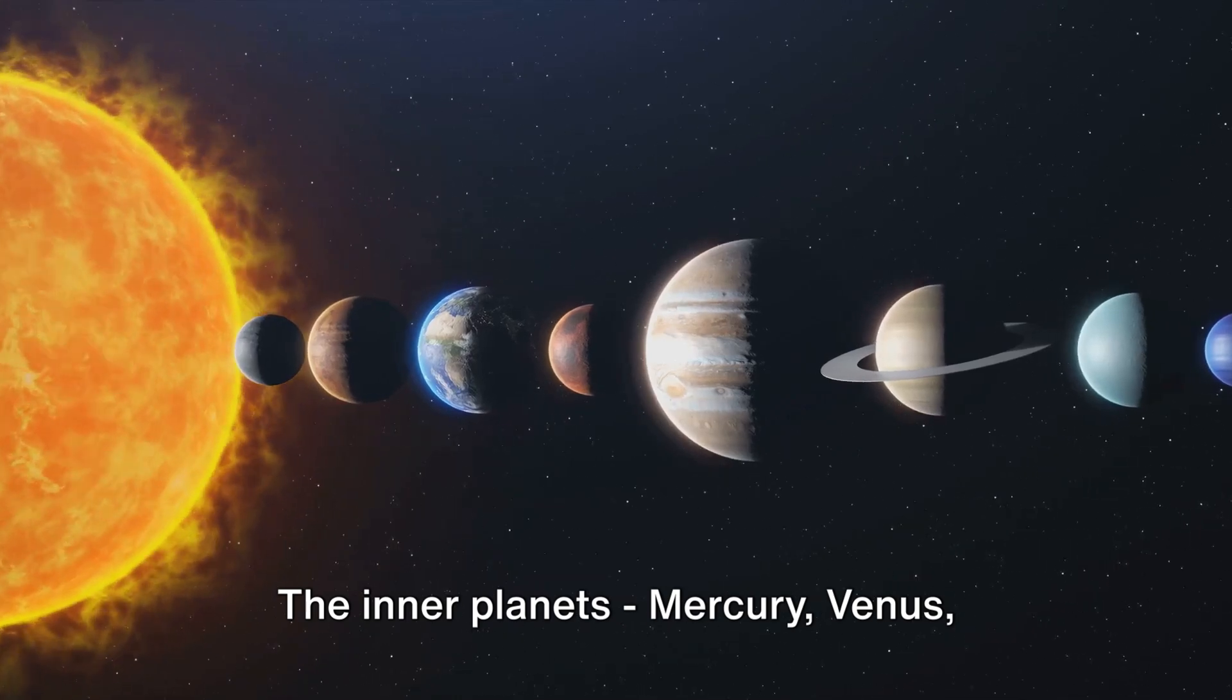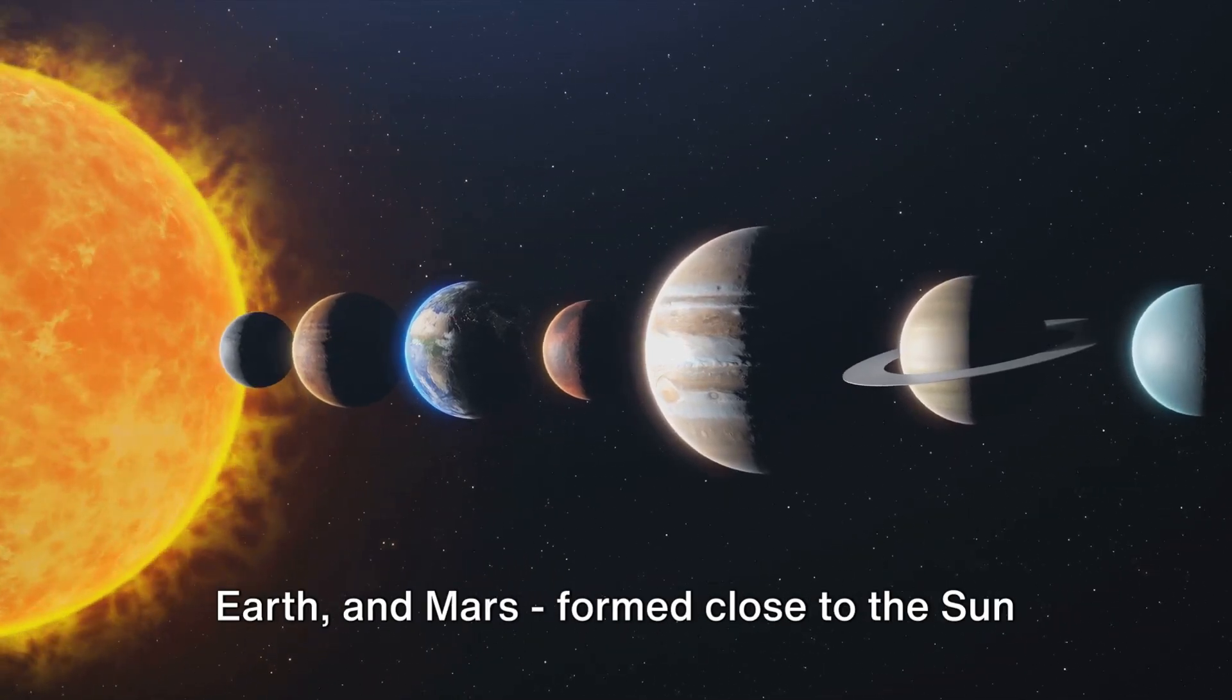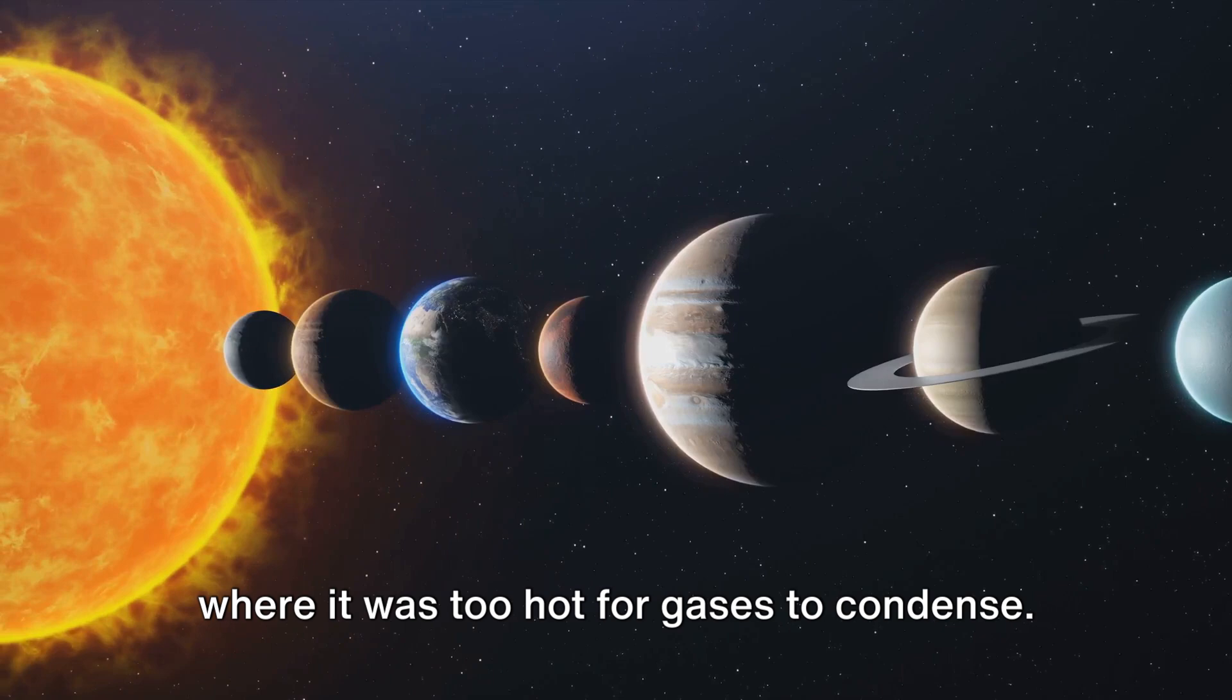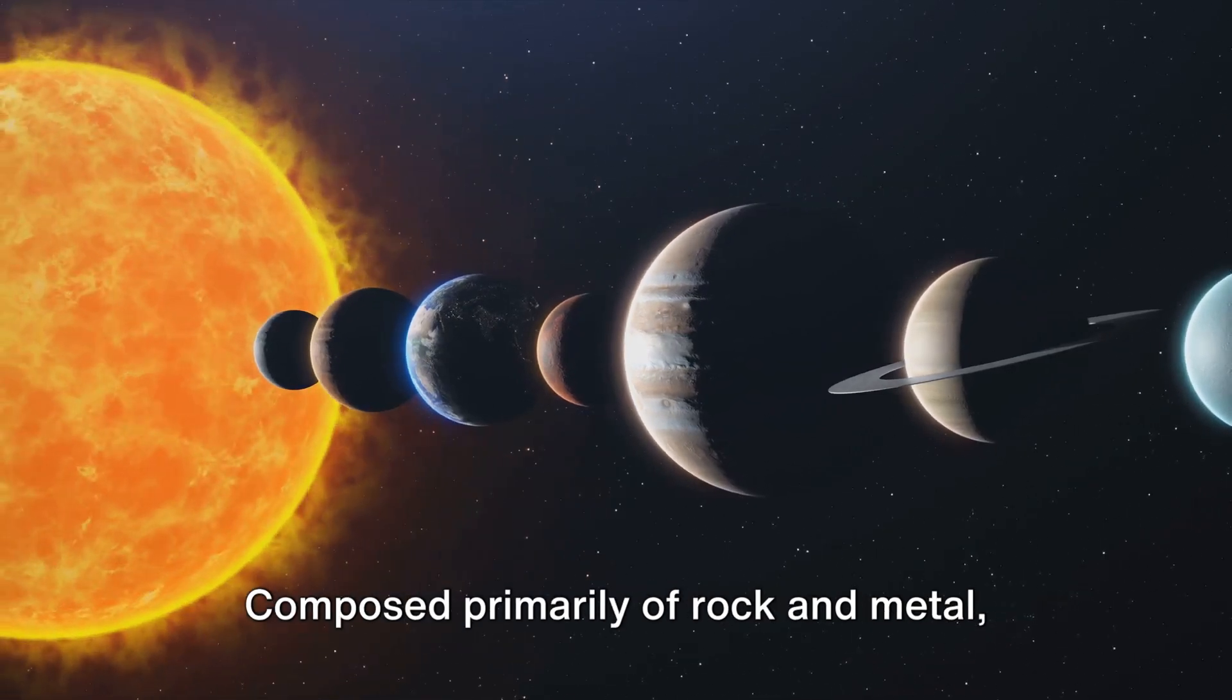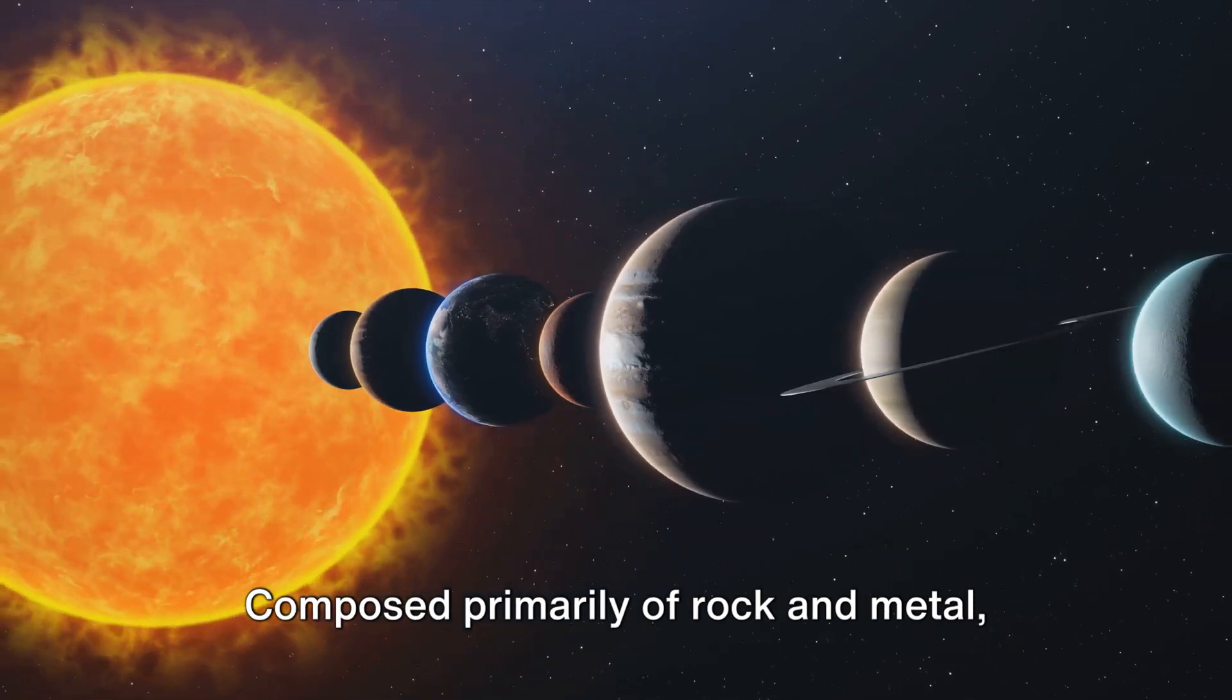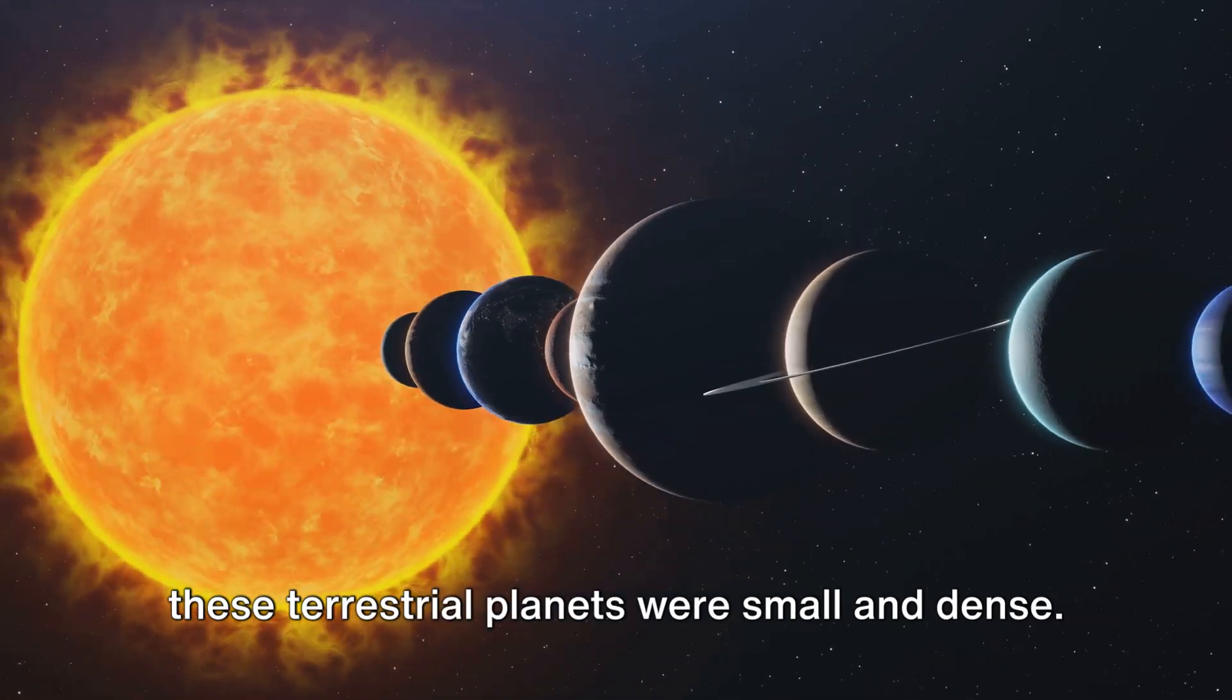The inner planets, Mercury, Venus, Earth and Mars, formed close to the sun where it was too hot for gases to condense. Composed primarily of rock and metal, these terrestrial planets were small and dense.